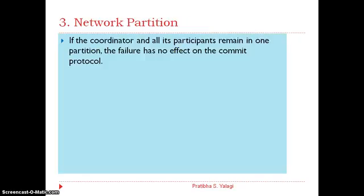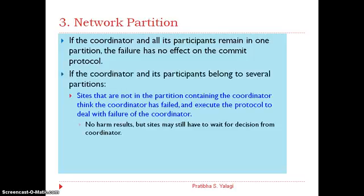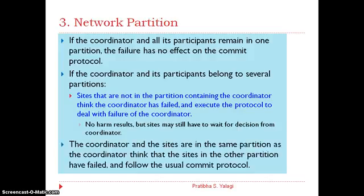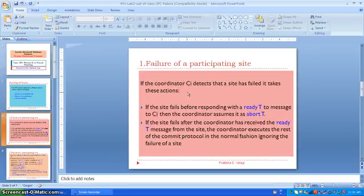The third type of failure is network partition. If the coordinator and all its participants remain in one partition, the failure has no effect on the commit. If the coordinator and its participants are split across several partitions, then the sites not in the partition containing the coordinator assume the coordinator has failed and execute the protocol to deal with coordinator failure. The coordinator and the sites in the same partition as the coordinator assume that the sites in the other partition have failed and follow the usual commit protocol.